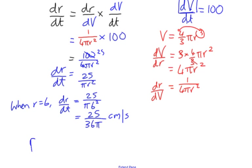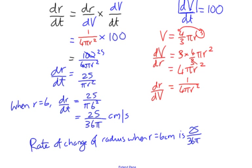And it's centimeters per second. We can write down the rate of change of radius when r equals 6 centimeters is 25 over 36π centimeters per second. That works out as something like 0.22 centimeters per second, but you can leave it as an exact value.